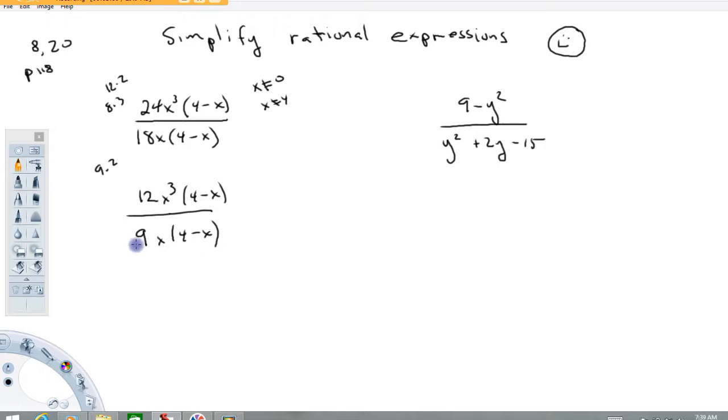Now looking further, you'll notice these are both divisible by 3. So I'm going to go ahead and divide this by 3. Now we're going to have 4x³(4 - x) over, this will become a 3x times (4 - x).